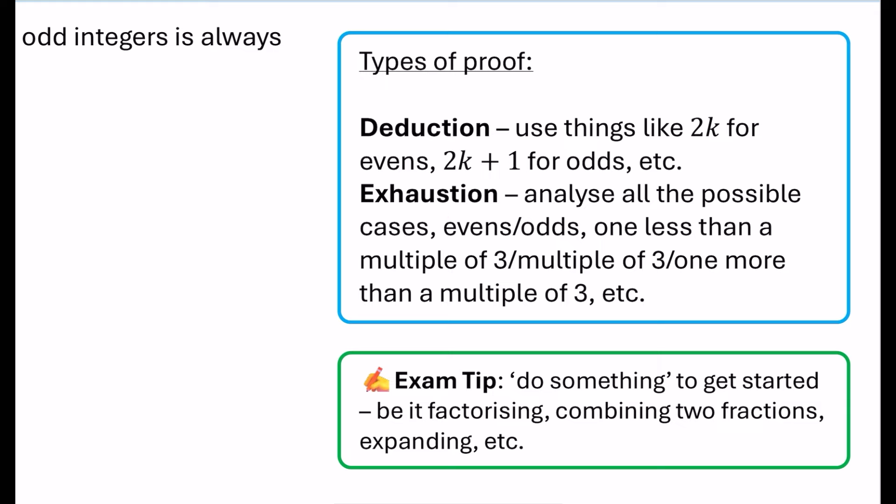Proof by exhaustion is where things get a little bit more interesting. This is where you want to analyse all of the possible cases. Usually it will be looking at even numbers and odd numbers, or something more common in recent years: an analysis in a different way — perhaps one less than a multiple of three, a multiple of three, and one more than a multiple of three. Zero is even, by the way, because zero can be written in the form 2k. You can also split numbers into other kinds of groups. If you think of any integer, it is either a multiple of three, one more than a multiple of three, or one less than a multiple of three.